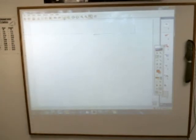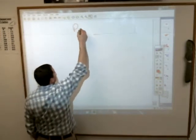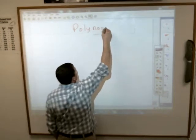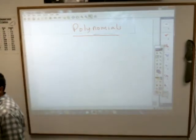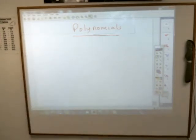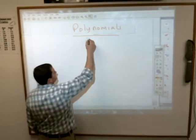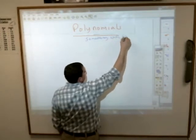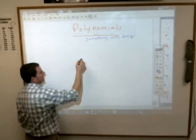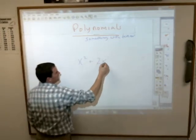Now for this one piece of paper: polynomials. A polynomial is nothing more than something that has terms. For example, if I have x squared plus 2x plus 6.